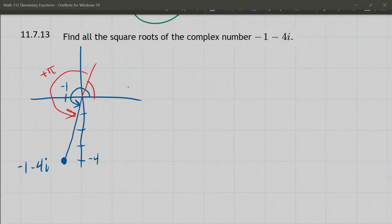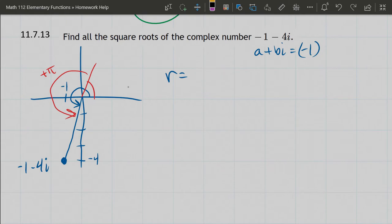Let's do the easy part first. The radius is going to be - and again we have a + bi, so our a is -1 plus b is -4i - r = √(a² + b²).